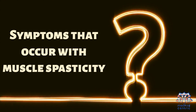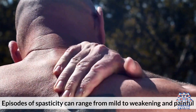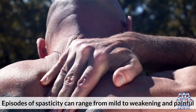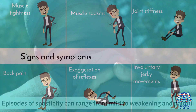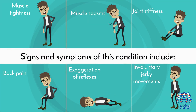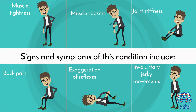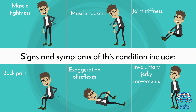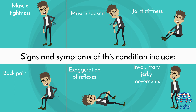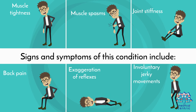Symptoms that occur with muscle spasticity: Episodes of spasticity can range from mild to weakening and painful. Signs and symptoms of this condition include muscle tightness, muscle spasms, joint stiffness, back pain, exaggeration of reflexes, and involuntary jerky movements.